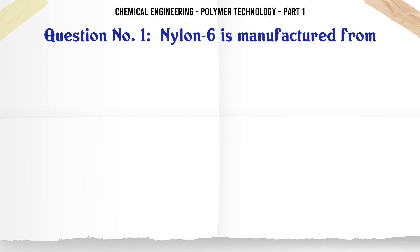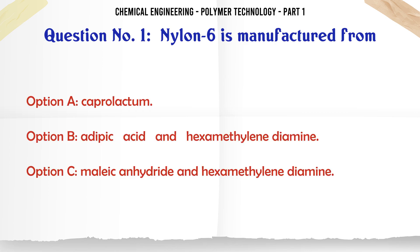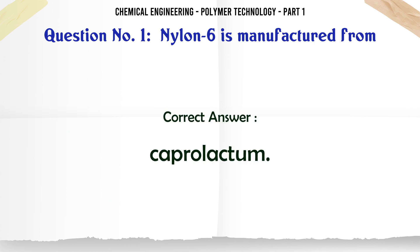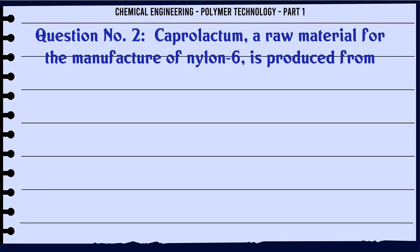Nylon 6 is manufactured from: A. Caprolactam, B. Adipic acid and hexamethylene diamine, C. Maleic anhydride and hexamethylene diamine, D. Sebacic acid and hexamethylene diamine. The correct answer is Caprolactam.